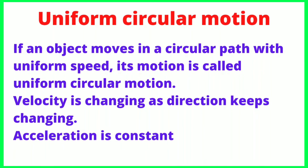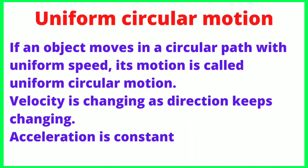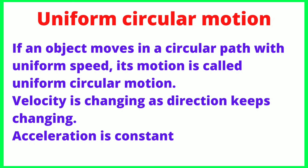Now we look at uniform circular motion. If an object moves in a circular path with uniform speed, its motion is called uniform circular motion. The velocity is changing because the direction keeps changing — direction is a vector quantity. The rate of change in velocity is acceleration, so there is constant acceleration in uniform circular motion.